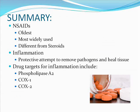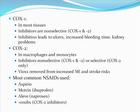In summary, NSAIDs are the oldest and most widely used drugs and they differ from steroids. Inflammation is the protective attempt to remove pathogens and heal tissue. Drug targets for inflammation include phospholipase A2, COX-1, and COX-2. COX-1 is present in most tissues; its inhibition is non-selective and leads to ulcers, increased bleeding time, and kidney problems. COX-2 is present in macrophages and monocytes; its inhibitors can be non-selective or selective. Vioxx was recently removed due to increased risk of myocardial infarction and stroke. The most common NSAIDs used are aspirin, Motrin, Aleve, and COX-2 selective inhibitors.